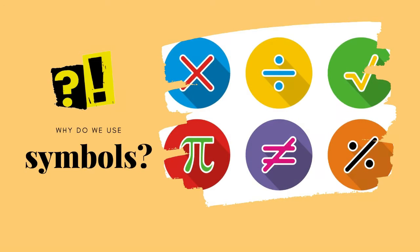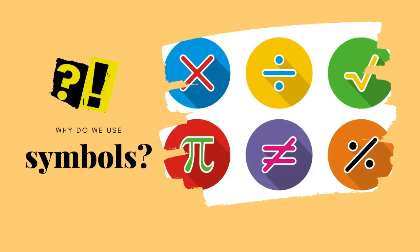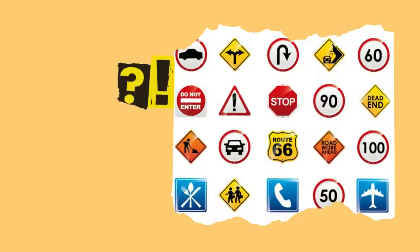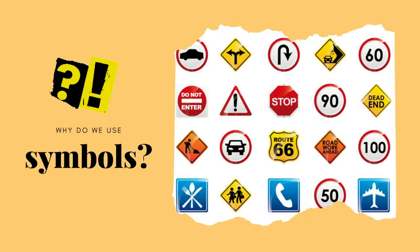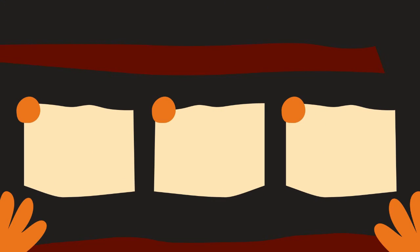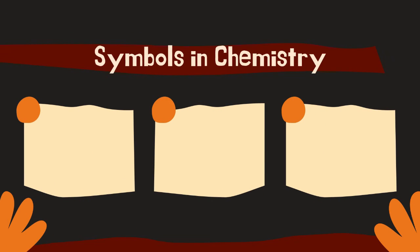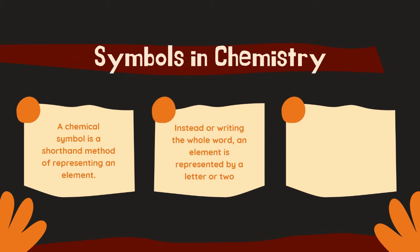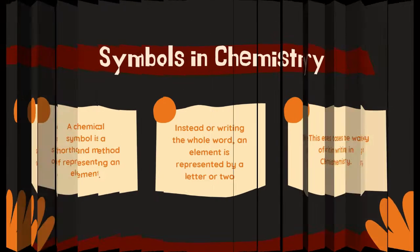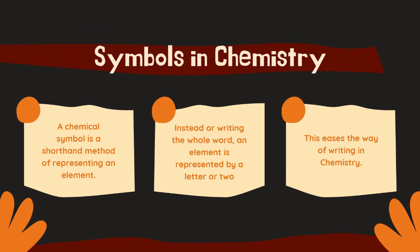Before we begin, I would like to ask you all a question. Why do we use symbols in our daily life? We have mathematical symbols, root symbols and many more. Symbols in chemistry are used as a shorthand method of representing an element. Instead of writing the whole word, an element can be represented by a letter or two. This eases the way of writing in chemistry.